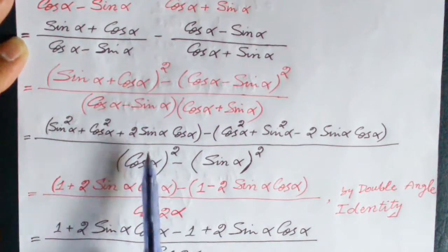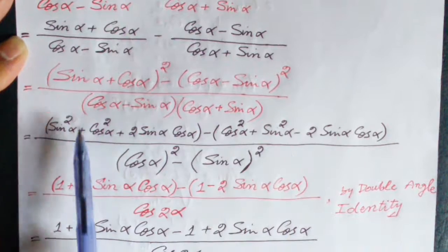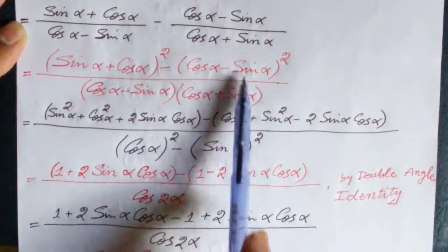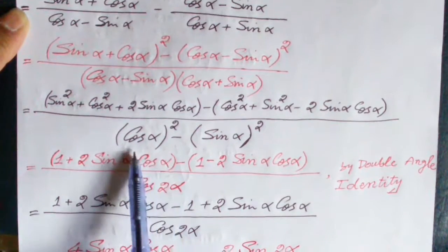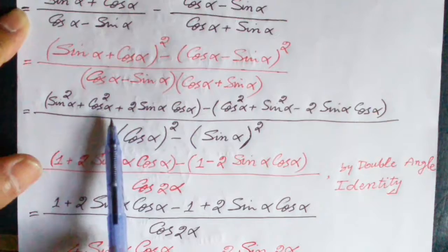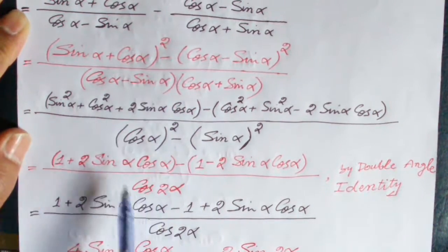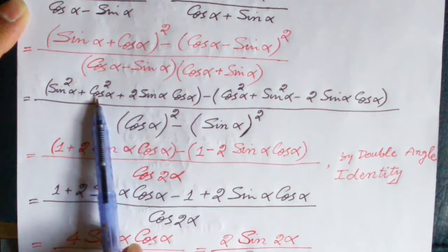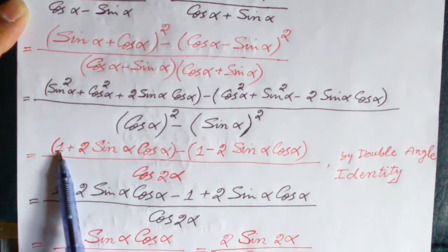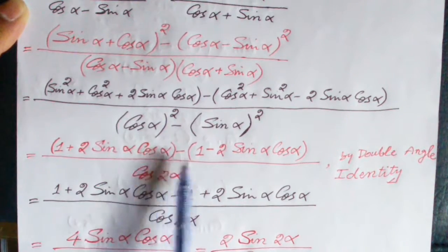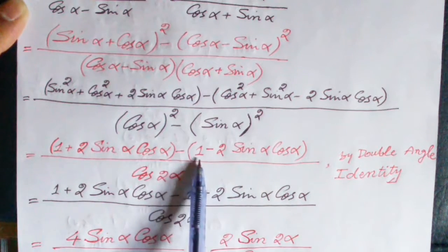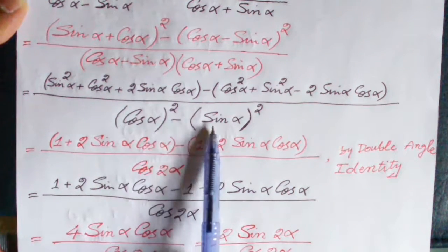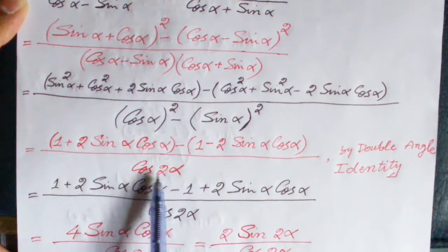Applying the (A + B)² and (A − B)² formulas, the numerator becomes: (sin²α + cos²α + 2 sin α cos α) minus (cos²α + sin²α − 2 sin α cos α). The denominator, using the A² − B² formula, becomes cos²α − sin²α. Using the fundamental identity, sin²α + cos²α = 1, and the double angle identity, cos²α − sin²α = cos 2α.